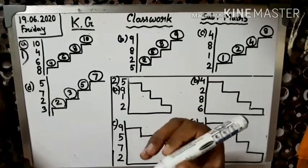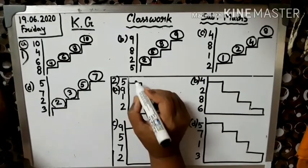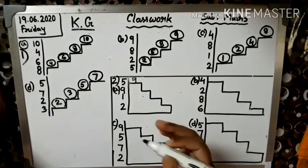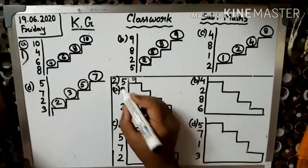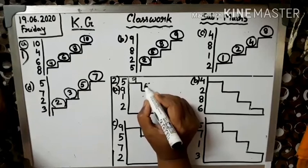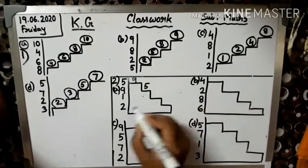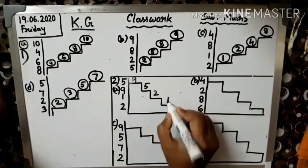Tum repeat karo: ten, nine - oh ahan nine hai, right, nine. Ten, nine, eight, seven, six, five. Dekho, five hai. Four, three, two, one. Two hai. One hai, okay.